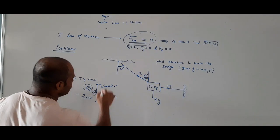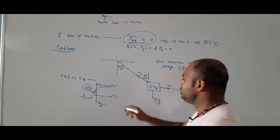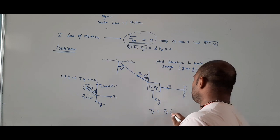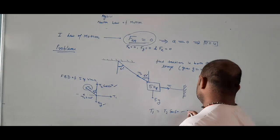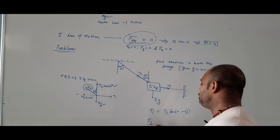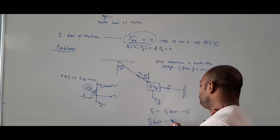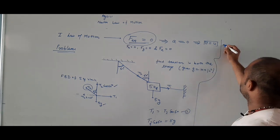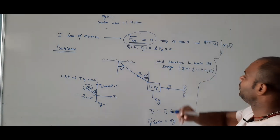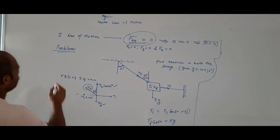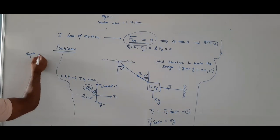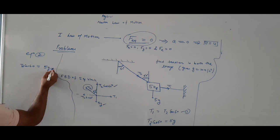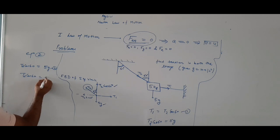Equating forces: the upward component T2 sin 60 equals T1, so T1 equals T2 sin 60 — that is equation 1. The vertical equilibrium gives T2 cos 60 equals 5g, so T2 equals 5g upon cos 60, which is 50 upon cos 60.